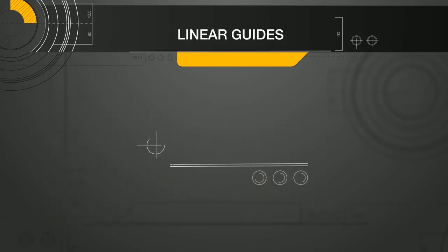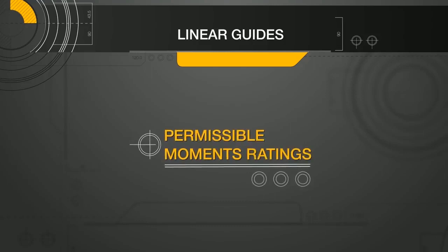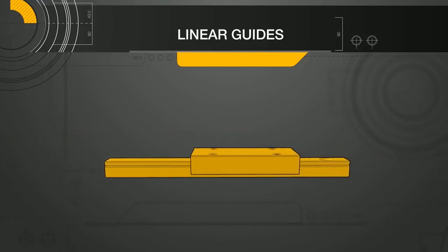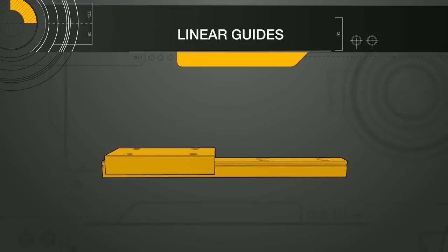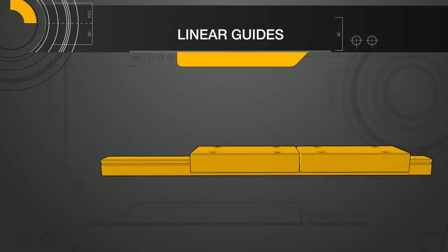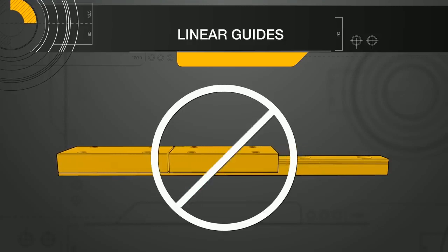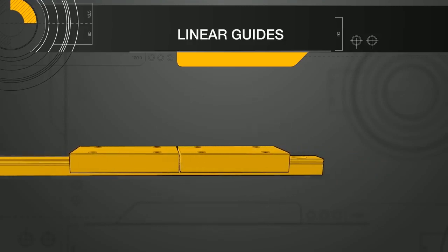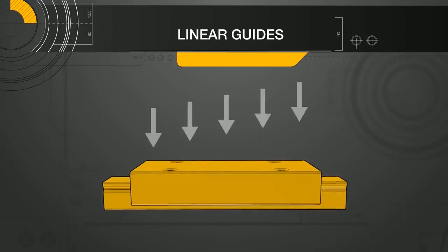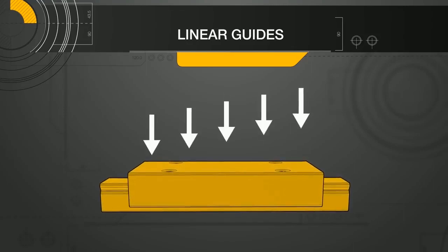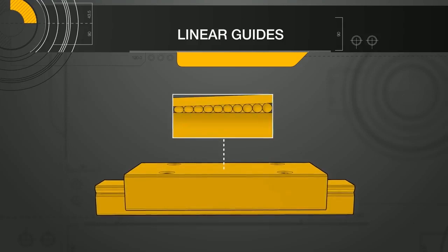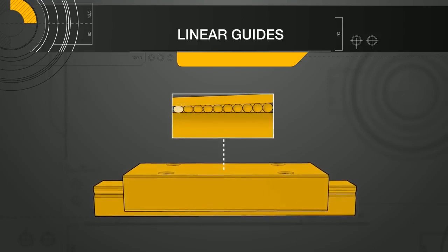The last set of ratings commonly found for linear guides are permissible moment ratings. The permissible moment ratings in the catalogs are for moments applied to a single block on a single rail. They do not apply when using multiple blocks or rails in a system. When a single block experiences a moment, the load is unevenly distributed among the bearing elements. The permissible moment rating is based on the loading for the worst-case ball or roller.